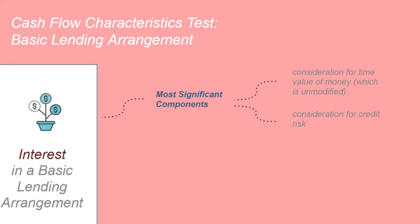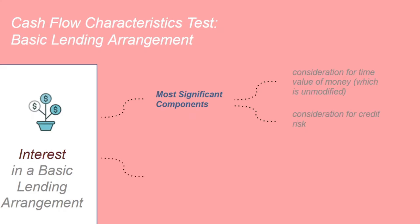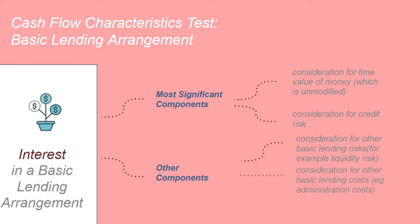These are the two most significant components of interest in a basic lending arrangement: time value of money and consideration for credit risk. But in addition, interest can also comprise other components, including consideration for other basic lending risks such as liquidity risk, consideration for other basic lending costs such as administration costs, and a profit margin that is consistent with the basic lending arrangement.